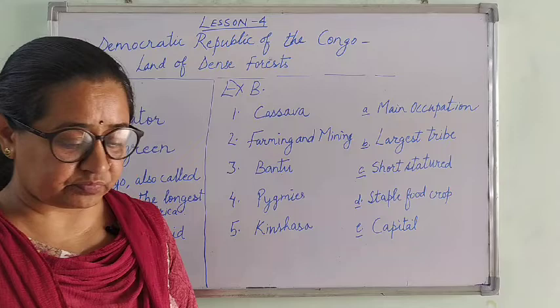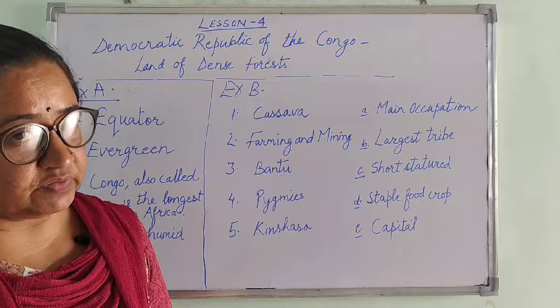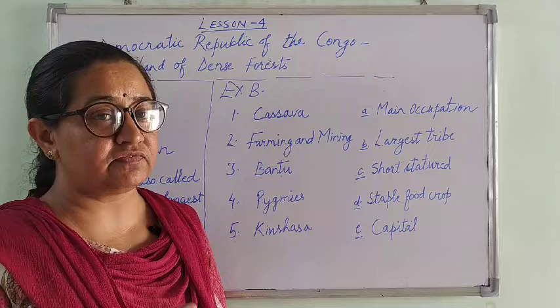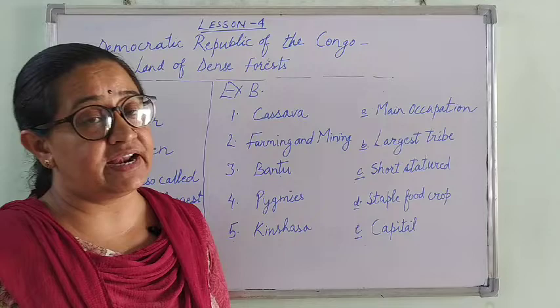First of all we learned the location of this country, Democratic Republic of Congo. It is located in the equatorial region, that means near the equator. The equator passes through the north of this country. We also studied about its climate — it has a hot and humid climate.